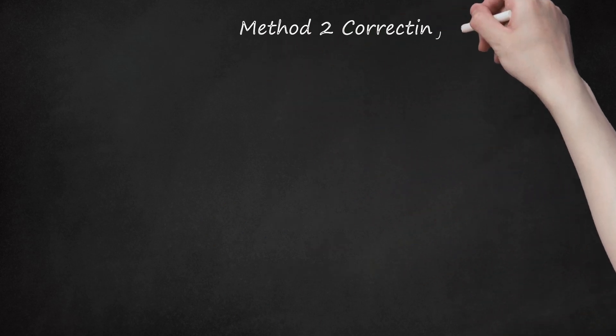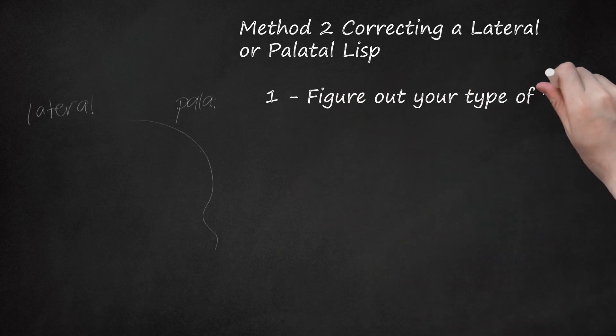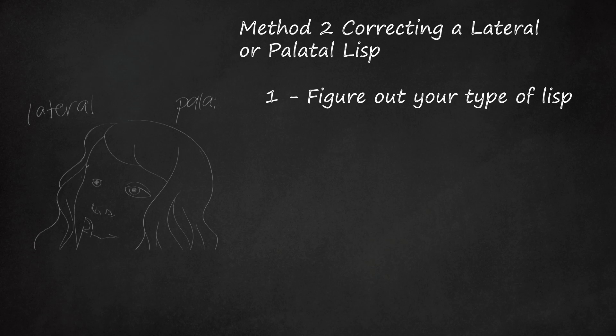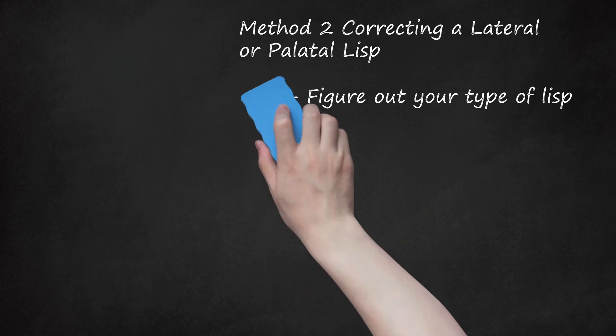Method 2: Correcting a Lateral or Palatal Lisp. Figure out your type of lisp. These two types of speech impediments affect the S and Z sounds in different ways, but they can be improved by similar exercises. Lateral lisp: S comes out as a slushy or wet sound. You hold your tongue in a position similar to an L sound, and this lower position allows air to escape out the sides of your mouth. Palatal lisp: S comes out as a high sound, created by the mid section of your tongue contacting the soft palate way back on the roof of your mouth.